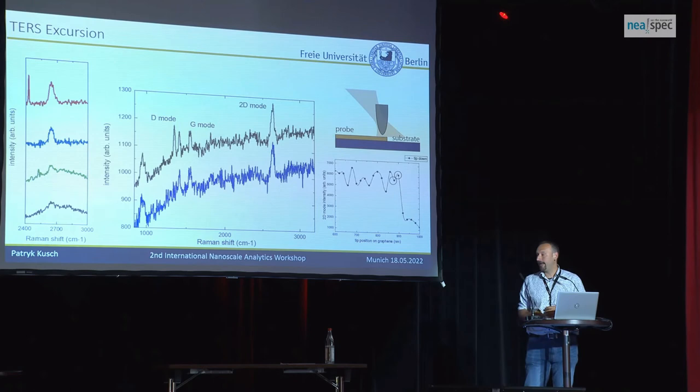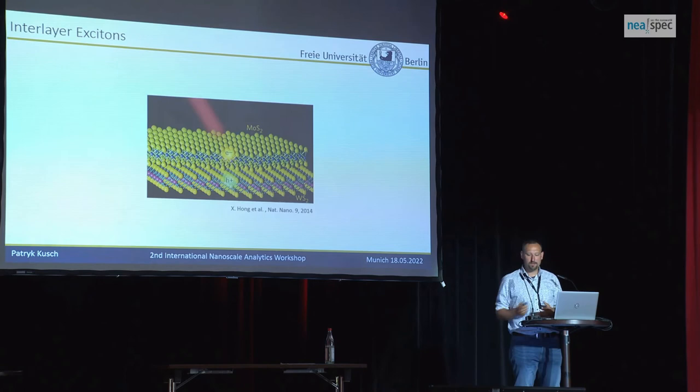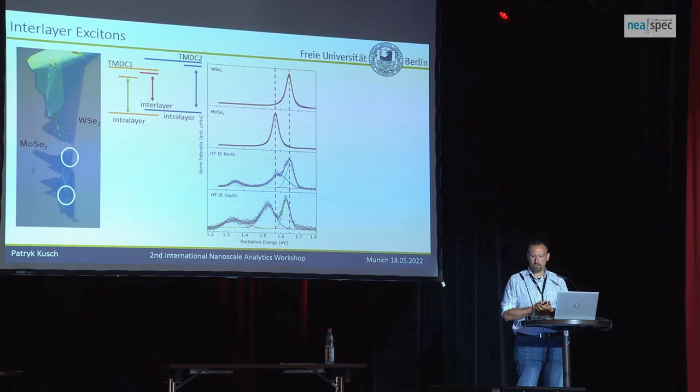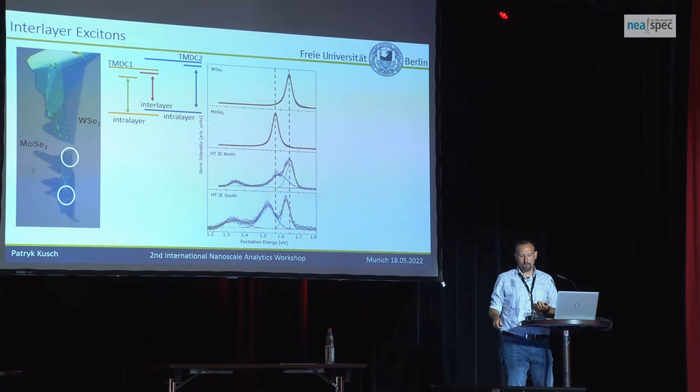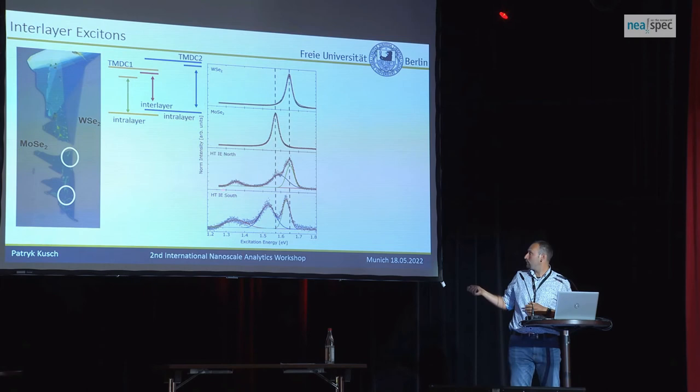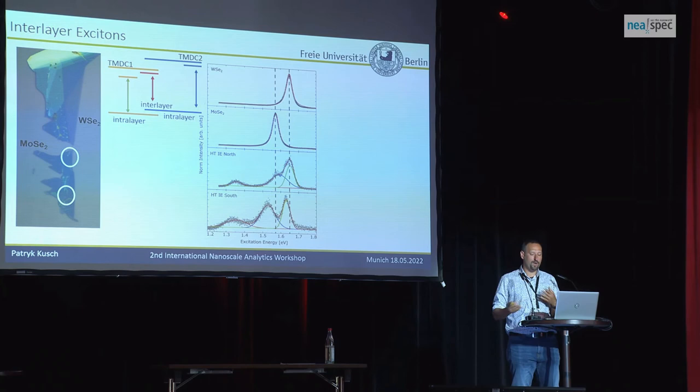Finally, going away from TERS and back to SNOM — and going to interlayer excitons. We created a second sample of MoSe2 and tungsten diselenide in collaboration with Tobias Korn from Rostock. Oshin produced them by exfoliation. We again do photoluminescence first and find two areas — we called them north and south — where we see PL arising from the recombination of the interlayer exciton. Only there do we have this interaction; the flake is larger but you need a really clean interface, without contamination, air, or bubbles, for this coupling to occur.